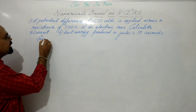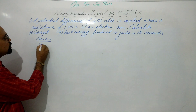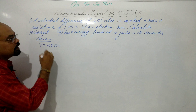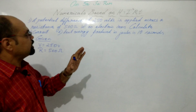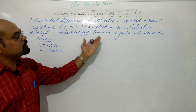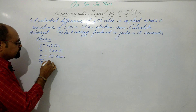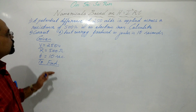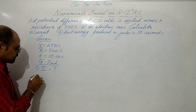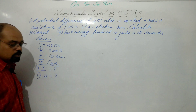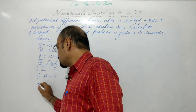Given: potential difference V = 250 volts, resistance R = 500 ohms, time T = 10 seconds. To find: current I = ? and heat energy produced H = ?. The formulas we are using are Ohm's law I = V/R and Joule's law of heating H = I²RT.